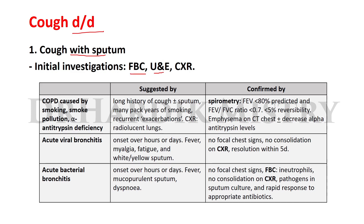Initial investigations for cough with sputum include full blood count, urine and electrolyte examinations, and chest X-ray. The first condition is COPD — chronic obstructive pulmonary disease — caused by smoking, smoke pollution, or alpha-1 antitrypsin deficiency. Alpha-1 antitrypsin is a protein produced in the liver that protects the body's tissues from being damaged by infection-fighting agents released by the immune system. COPD is suggested by a long history of cough with or without sputum, many years of smoking, and recurrent exacerbations, with chest X-ray showing radiolucent lungs.